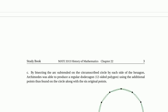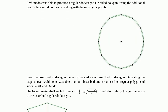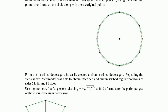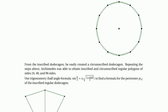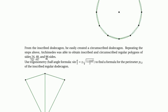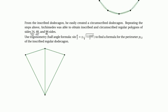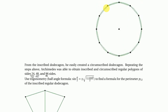Using this method, Archimedes bisected each side into two equal parts, going from the hexagon to a dodecagon. Then continuing: inscribed and circumscribed versions at each stage. So next are 24, 48, and 96-sided polygons. Let's see what the perimeter p12 looks like for the 12-sided case.